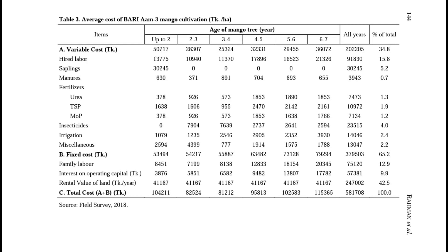Looking at the total cost figures: up to two years, the average farm cost was about 1 lakh 4 thousand taka. From two to three years, the cost was about 82,000 taka. From three to four years, it was about 81,000 taka. From four to five years, about 95,000 taka. And in the five to six year and six to eight year range, it was about 1 lakh 10 thousand taka on average.